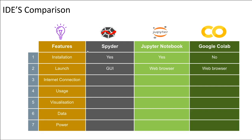The next feature is internet connectivity. For Spyder and Jupyter Notebook, you don't need an active internet connection. Whereas Google Colab is a cloud-based IDE, so you need an active internet connection to work on it.